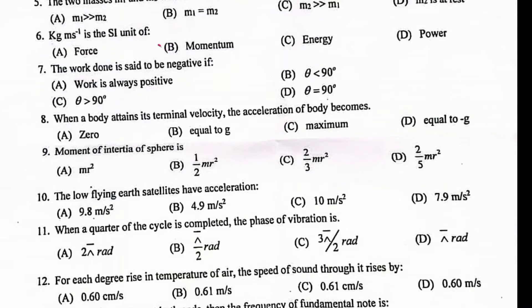The work done is said to be negative if theta greater than 90 degrees. When a body attains terminal velocity, the acceleration of body becomes zero. Moment of inertia of sphere is 2 over 5 m r square.